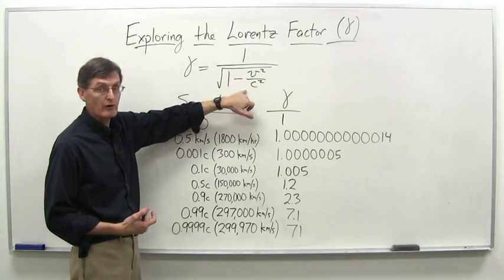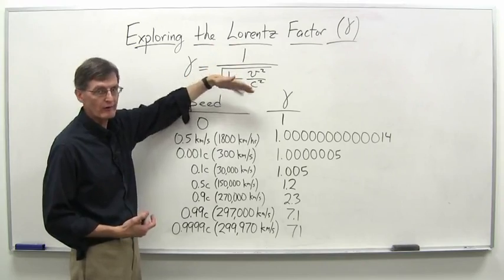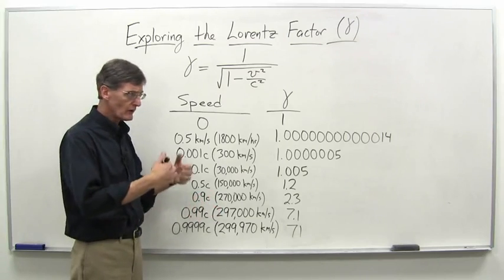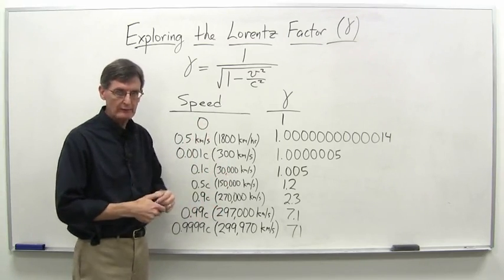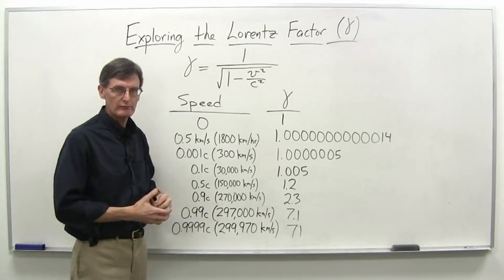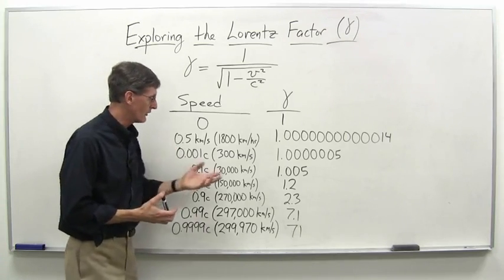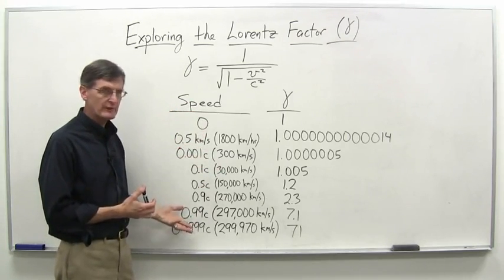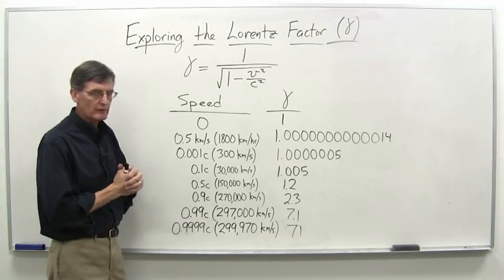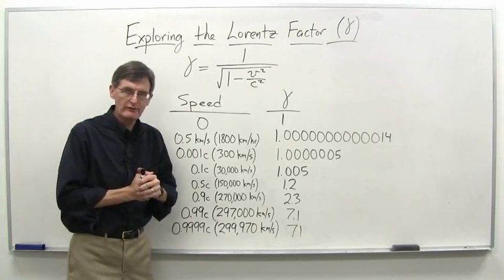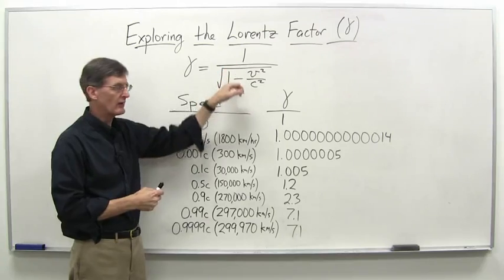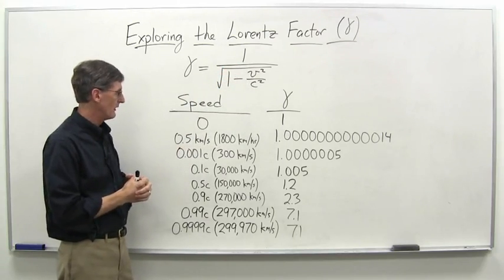If this is small compared to 1, then this is pretty much 1 over 1, and gamma is about 1, and we don't see any difference. The elapsed time on a moving clock is the same as elapsed time on an identical stationary clock in terms of how precisely we can measure it. So what we've done here is just list some speeds, and then the results for gamma for each of those speeds. It's a useful and fun exercise for you to plug in some numbers, do the calculations, and come out with your own values of gamma.